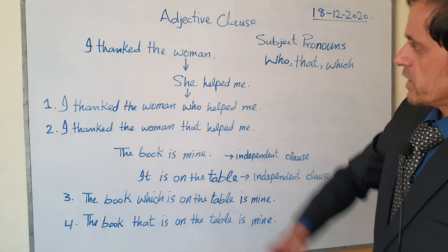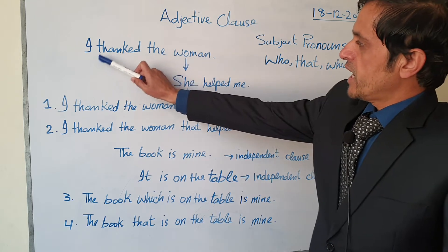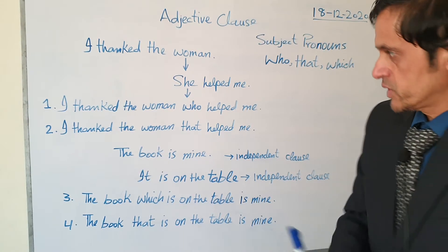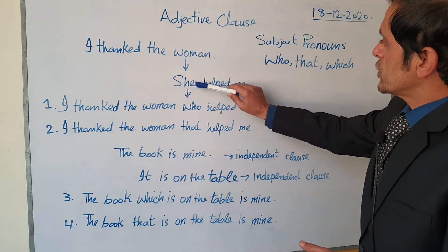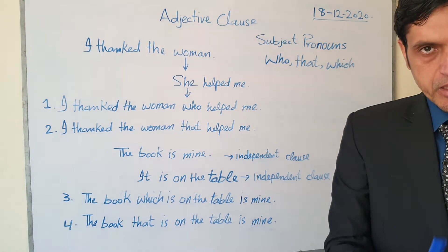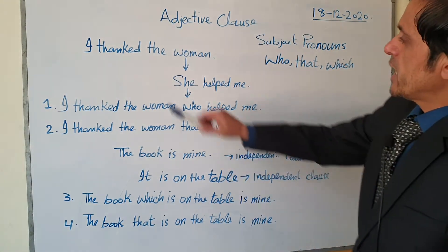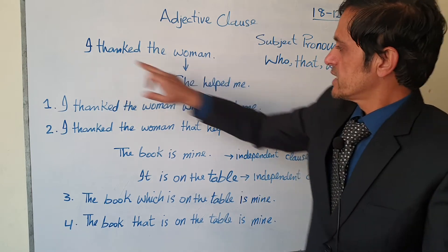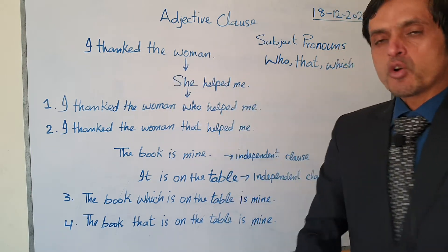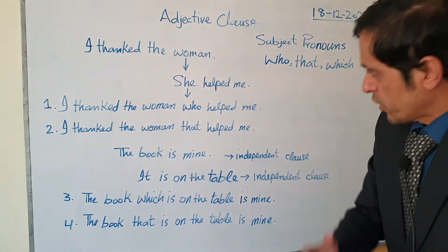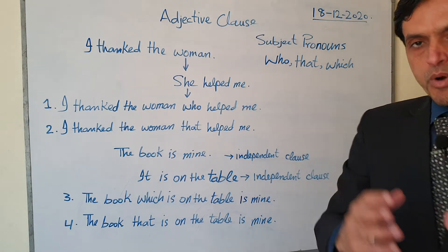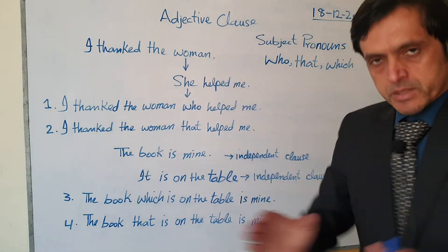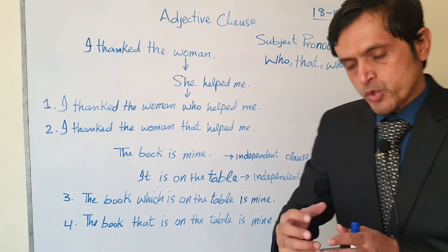We have two independent clauses here. Number one: 'I thanked the woman.' This is one independent clause. Number two: 'She helped me.' This is another independent clause. Both of them have a subject and a verb, so both are clauses. And both are independent clauses because they have a main subject.